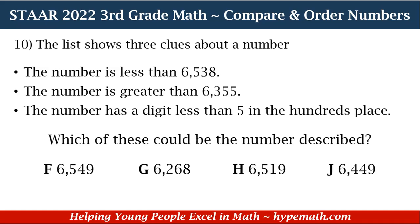Number 10 says: the list shows three clues about a number. Clue one: the number is less than 6,538. Clue two: the number is greater than 6,355. Clue three: the number has a digit less than five in the hundreds place. Which of these could be the number described? Is it F, 6,549? G, 6,268? H, 6,519? Or J, 6,449?